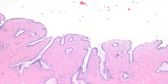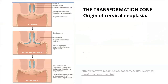The endocervix is lined by mucin-secreting columnar cells. After puberty, the squamous columnar junction moves towards the exocervix. The area between the previous or original squamous columnar junction and the post-pubertal squamous columnar junction is called the transformation zone. This area is histologically characterized by the presence of metaplastic epithelium.